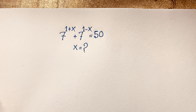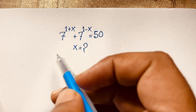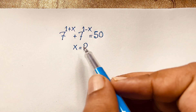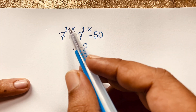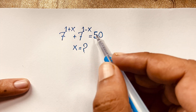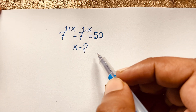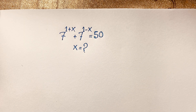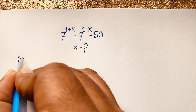Hello everyone, welcome to Rasha's classroom. Today we have an interesting exponential math problem which is 7 to the power (1 plus x) plus 7 to the power (1 minus x) is equal to 50. How do we solve this for x? Let me solve this question with a method.